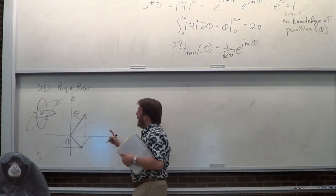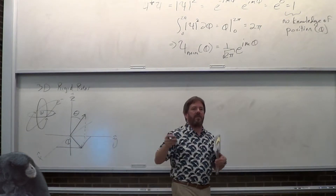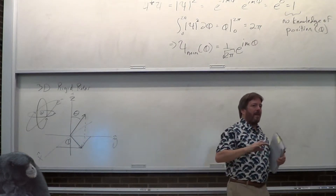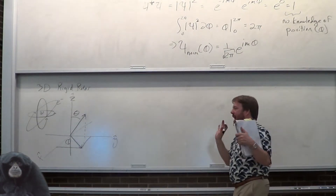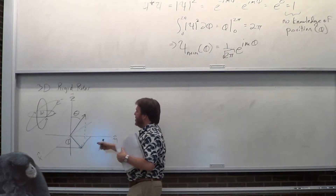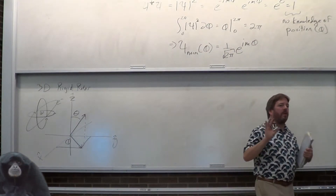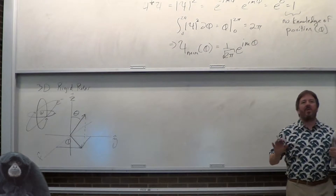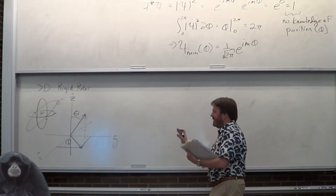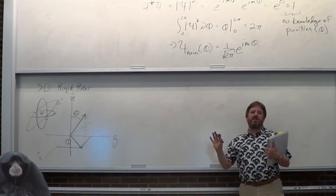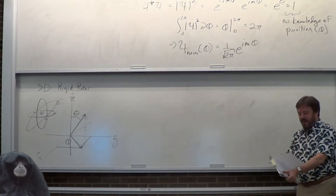if you find a math Wikipedia or whatever, those angles are reversed. Mathematicians define angles different ways. So be really careful when you look up answers online because those angles can be changed. This is the physics and chemistry way.